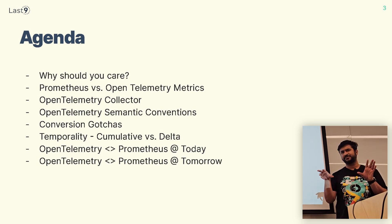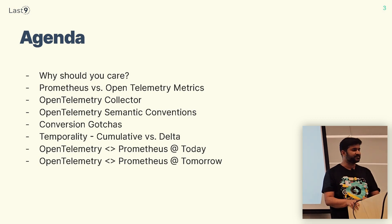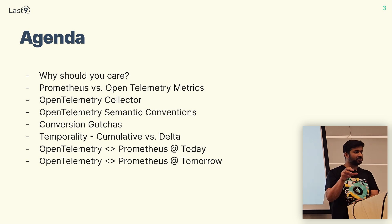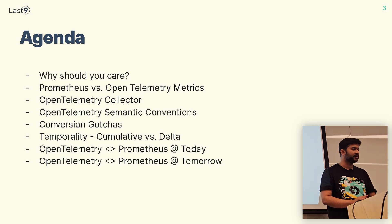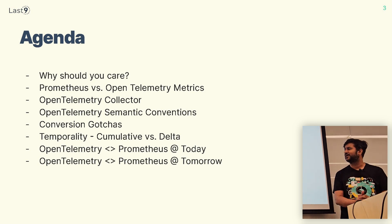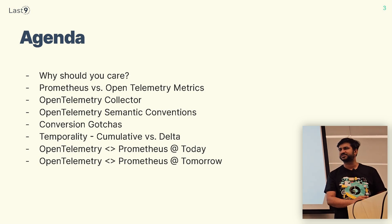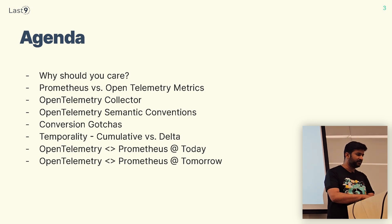In the metrics ecosystem, there are two giants. Prometheus is one of the tools people use for monitoring. OpenTelemetry is another way of doing metrics. I'll talk about differences between both of them, a component called the OpenTelemetry collector — which is a centralized component for processing data and transferring it to multiple destinations — semantic conventions, compatibility conversion issues between Prometheus and OpenTelemetry data, and where the ecosystem and roadmap are heading.